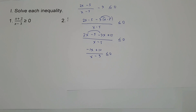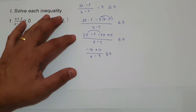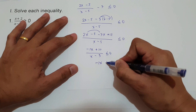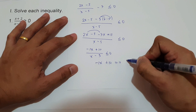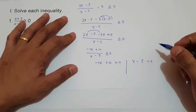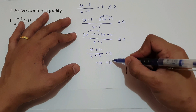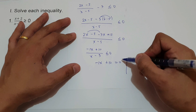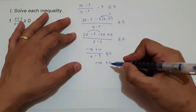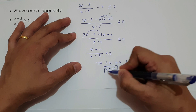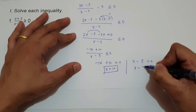The next step is to express the numerator and denominator in terms of 0. We have negative x plus 10 equals 0, giving x equals 10. And x minus 5 equals 0, giving x equals 5.